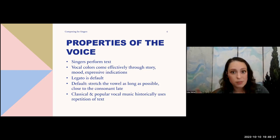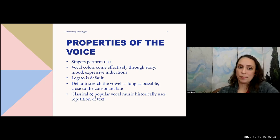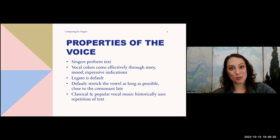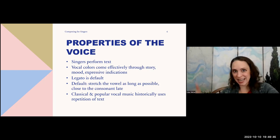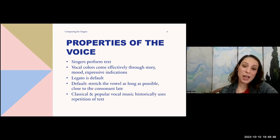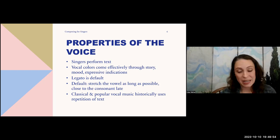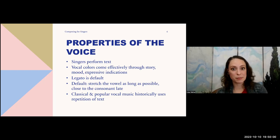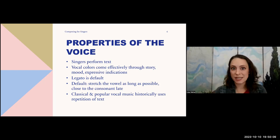Phrasing is usually determined by the text. If you're really concerned about a certain group of words, you can use a dotted or dashed slur to show that, but otherwise we're going to follow the text. Our default is to sing the vowel as long as possible and put consonants on the outside of each syllable — at the early end and at the late end. A property of vocal music historically is that a lot of classical and popular music repeats words and lines of text, either in the chorus or in setting the text in some other way.